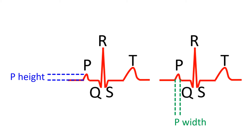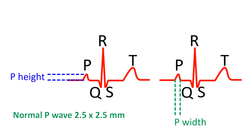Both the width and height of the P wave are measured to assess enlargement of the upper chambers, or the atria. A normal P wave in an adult has 2.5 mm as the upper limit for both width and height in a standard ECG recording at 25 mm per second paper speed. Width is increased in enlargement of the left atrium, and height in enlargement of the right atrium. If both are increased, both atria are enlarged.